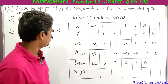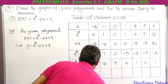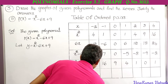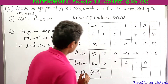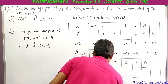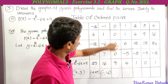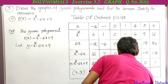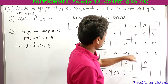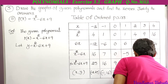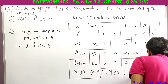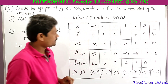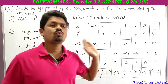So the ordered pairs are: (-2, 25), (-1, 16), (0, 9), (1, 4), (2, 1), (3, 0), (4, 1). These are the ordered pairs of the given quadratic polynomial x² - 6x + 9.